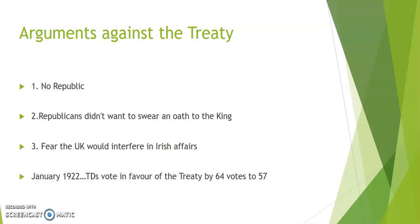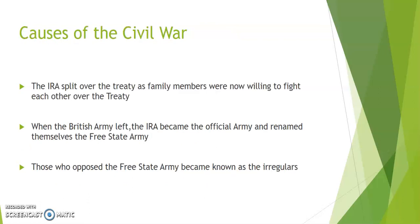TDs went home and consulted their constituencies over Christmas, then voted on the 7th of January 1922. It was very narrow: the treaty passed by 64 votes to 57. Those who were against the treaty left the Dáil, led by Eamon de Valera. Arthur Griffith replaced him as president.